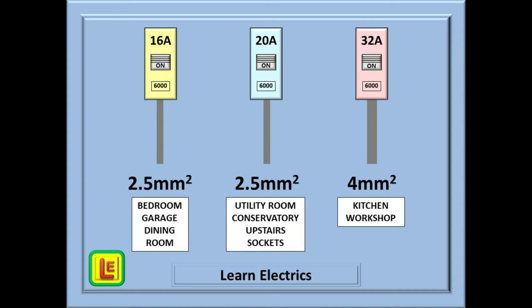My suggestions are based on a consumer unit that has sufficient ways to have individual circuits for many parts of the house, and I am not saying that they must be strictly followed. With smaller consumer units it might be necessary to have one circuit supplying a whole floor of sockets. Every installation is different, so my suggestions are just that — suggestions.